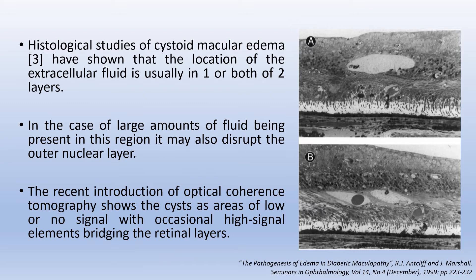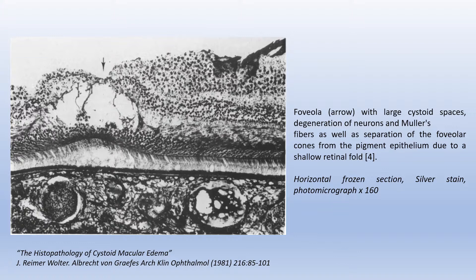Histological studies of cystoid macular edema have shown that the location of the extracellular fluid is usually in one or both of two layers: in the inner nuclear layer and the photoreceptor inner connecting fiber layer (Henle's layer) in the outer retina, sometimes erroneously called the outer plexiform. In the case of large amounts of fluid being present in this region, it may also disrupt the outer nuclear layer. The recent introduction of OCT shows the cysts as areas of low or no signal, with occasional high-signal elements protecting the retinal layers.